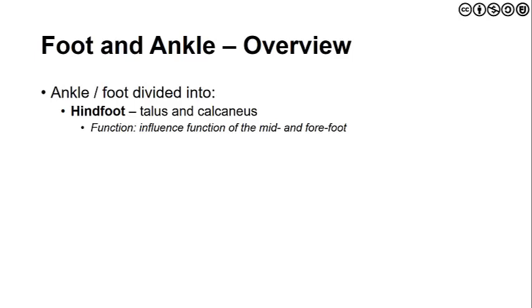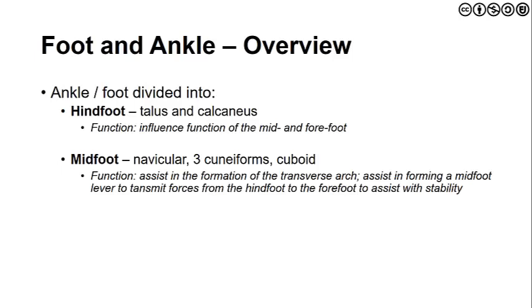The ankle and foot are divided into a couple of regions. First, we find the hindfoot, composed of the talus and the calcaneus. Its function is to influence the function of the mid and forefoot. Under normal gait circumstances, initial contact is going to occur in the hindfoot and then progress into the midfoot and forefoot through loading response and the stance phase of gait.